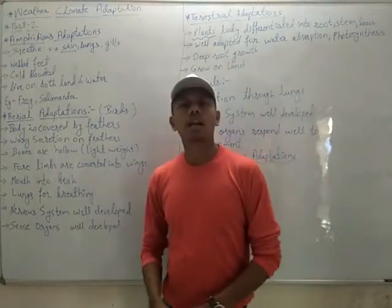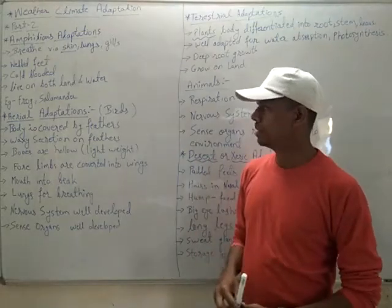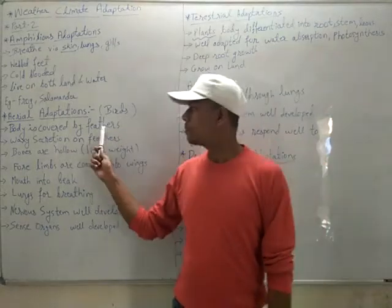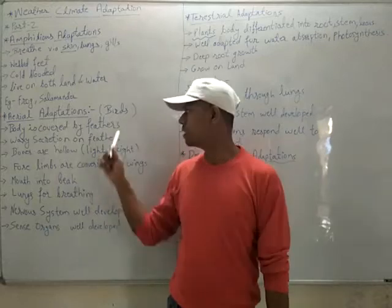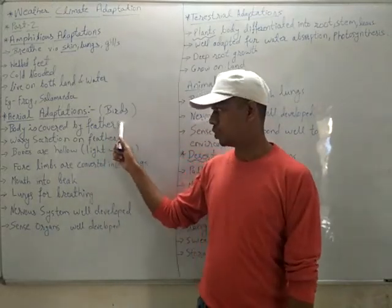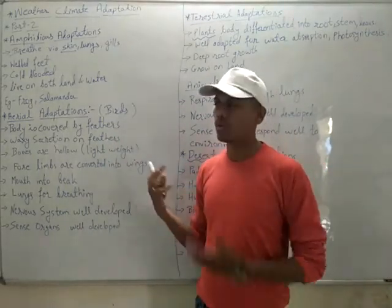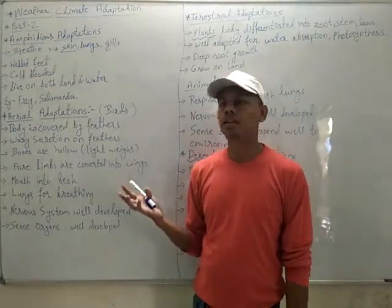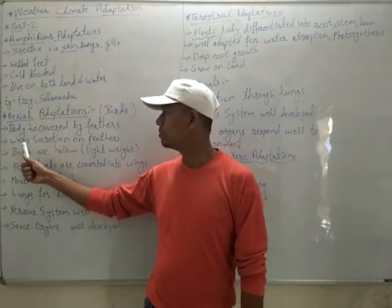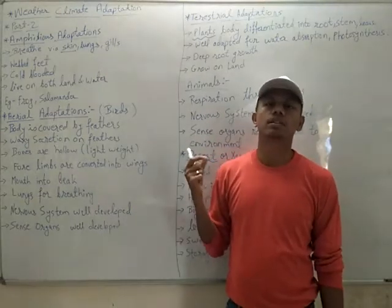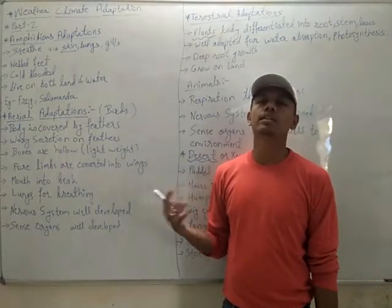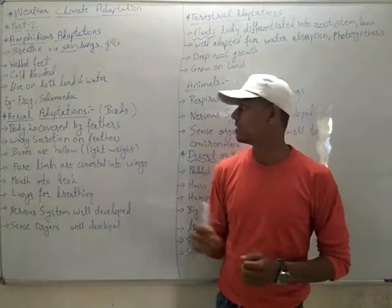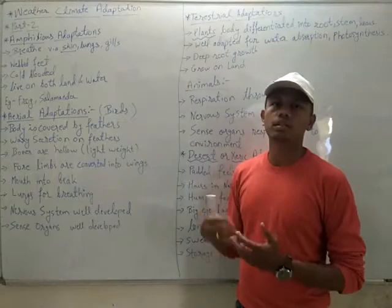The body of birds is covered by feathers, which protect from water in the rainy season and from cold in winter — acting as an insulator. Another adaptation seen in birds is a waxy secretion on the feathers. Glands in the skin secrete oily or waxy secretions onto the feathers, making them oily so that water does not come in contact with the feathers and the feathers do not get wet.